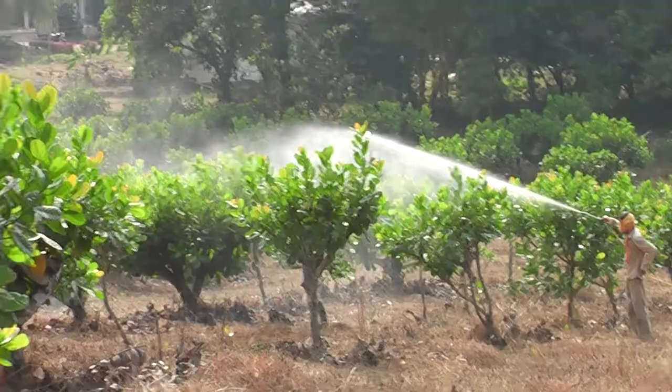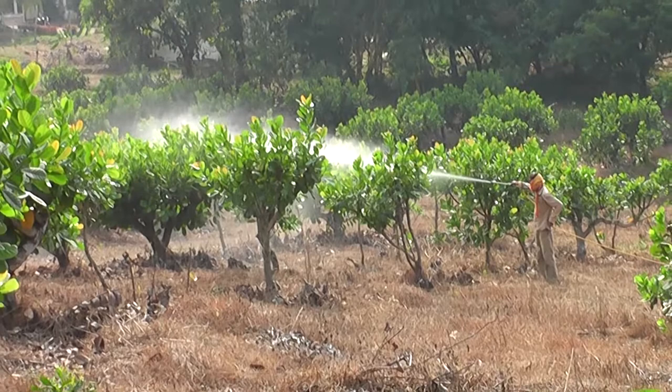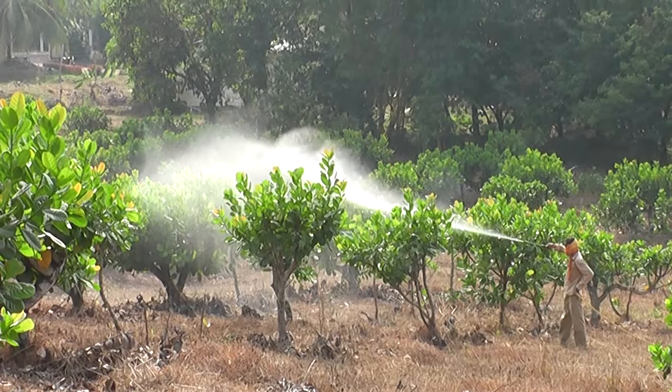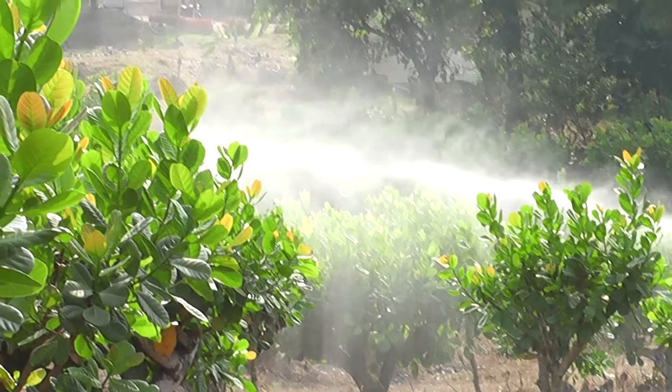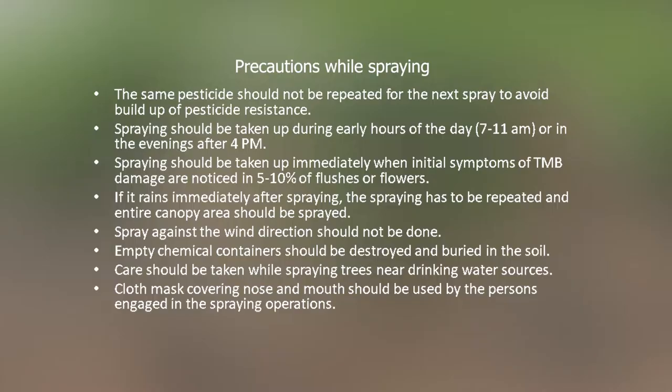The second round of spray should be invariably completed within three to four weeks if the TMB population still persists. If panicle damage is severe — that is, more than 50 percent — because of delayed insecticidal application, further sprays will not result in improved yields. A third spray can be need-based in case pest population persists even after the second spray. Some precautions to be taken while spraying are listed here.